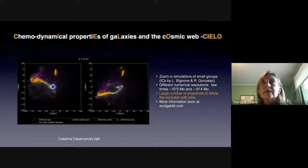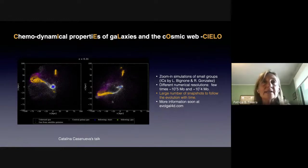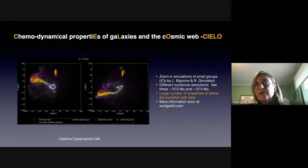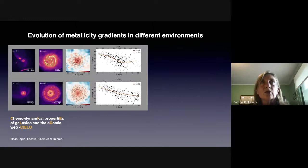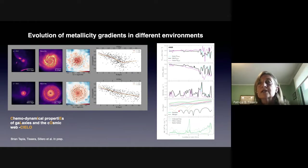Catalina Casanueva talked about the evolution of angular momentum and how it can be misaligned between the stellar and gas disk. We are also using this analysis to study the properties of the gas that falls into the galaxies and how it changes the metallicity gradient. This work, mainly done by Brian Tapia, takes certain galaxies and studies them in large detail — the evolution of the metallicity gradients from redshift about two to redshift zero.